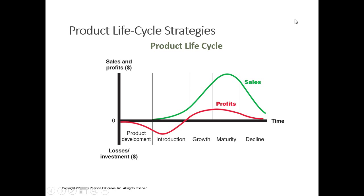We then move into the maturity stage where sales have kind of peaked. Depending on the industry this period could be very long or relatively short, but the important point is we have to start thinking — once it hits that peak — whether we want to milk it. Going back to the BCG concept, these are your cash cows: lots of revenue and sales coming in, but no real growth. It has only two places to go: back up into growth or into decline.